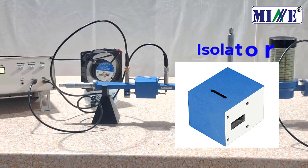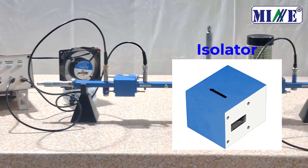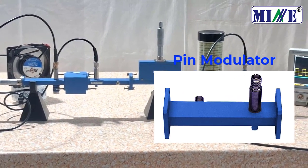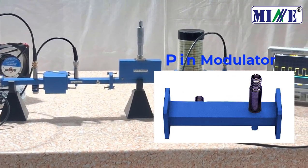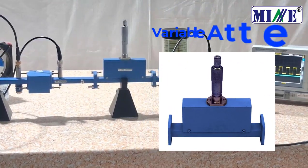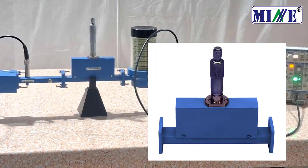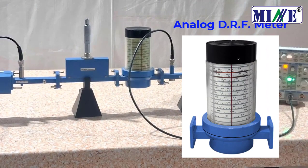Fourth is the isolator. Fifth is the pin modulator. Sixth is the variable attenuator. Seventh is the analog DRF meter.